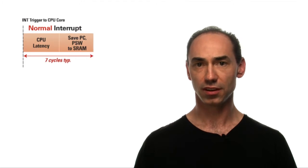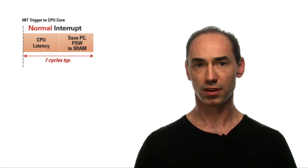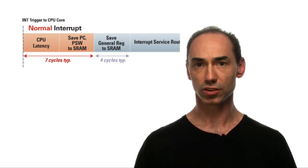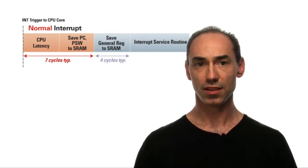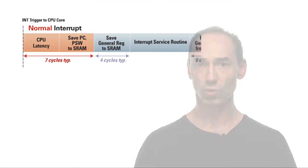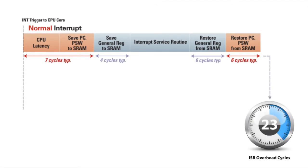Let's see how. RX offers tremendous flexibility in configuring interrupts. When configured as a normal interrupt, it takes seven cycles to save the state of the program counter and the program status word to SRAM. Next, the state of the general registers are saved to SRAM and the interrupt service routine is processed. Then the state is restored and the CPU returns to processing the program. With seven cycles of latency, the RX's normal interrupt is already very fast.